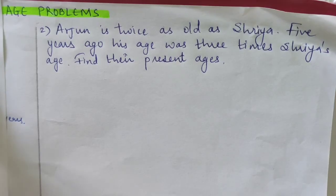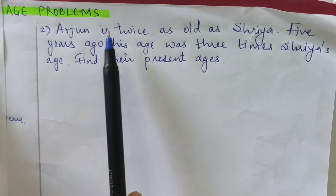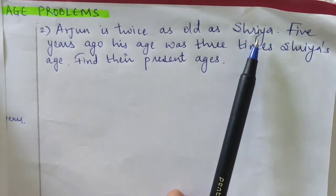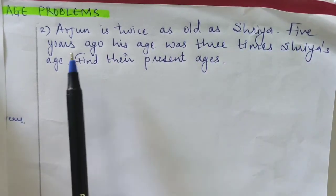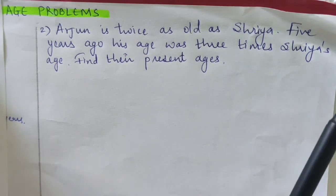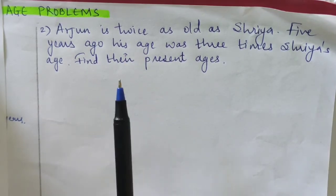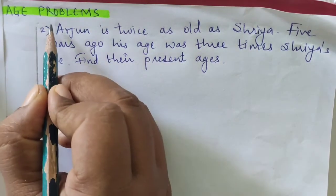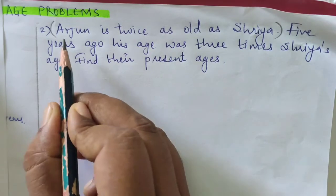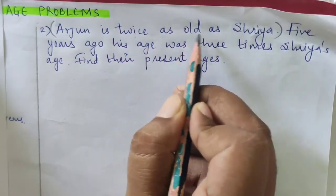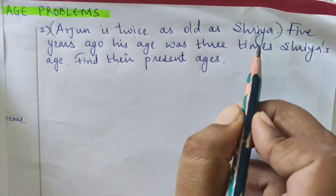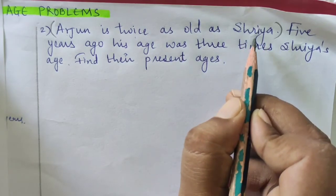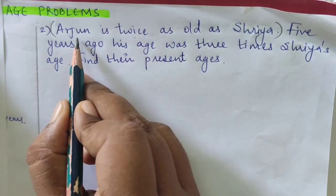Let us solve another word problem. Arjun is twice as old as Shriya. Five years ago his age was 3 times Shriya's age. Find their present ages. This problem is very similar to the first one. Let us look at the first statement: Arjun is twice as old as Shriya. If Shriya's present age is 8 years, Arjun's age will be 2 × 8 = 16 years.